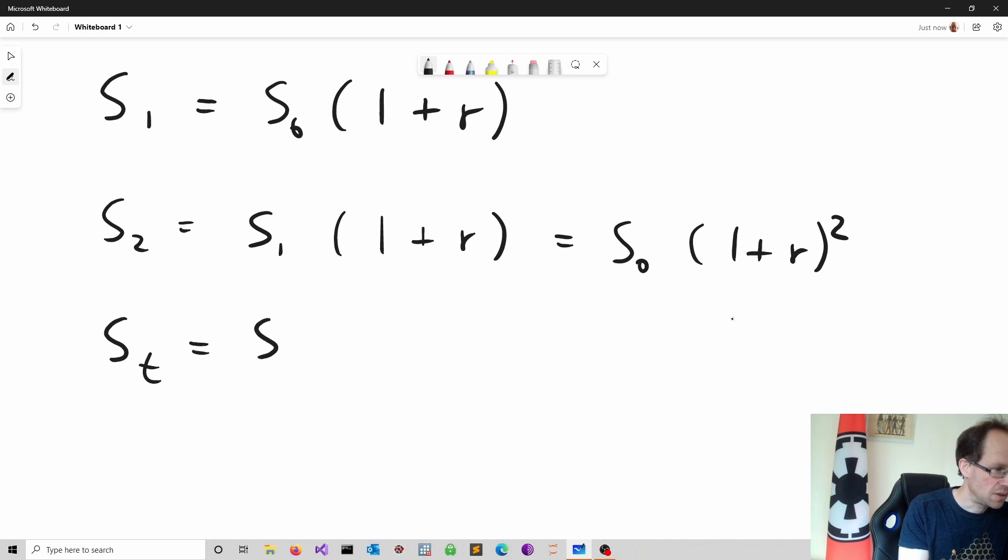S is S0, the initial value, times 1 plus R to the power of T, where T is element of the natural numbers. The value of savings S0 is the dependent variable and time T is the independent variable. The interest rate R is a parameter, it's a fixed value. In this model, time is discrete. We will come across many examples of recurrence relations. In addition, we will explore discrete and continuous time models.